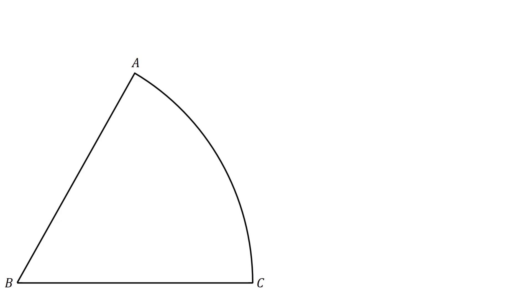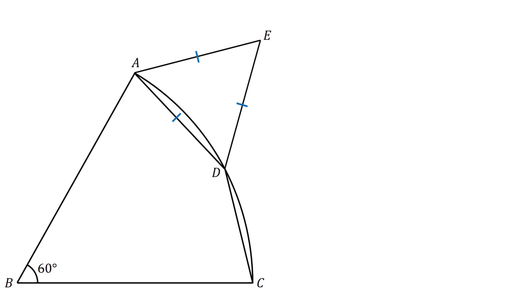ABC is a sector of a circle with a central angle of 60 degrees. AD and CD are chords of the circle. Next, construct equilateral triangles ADE and CFD.